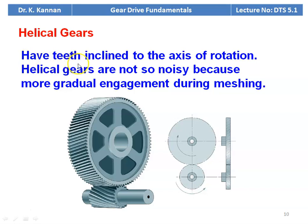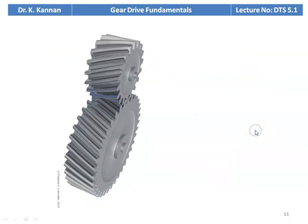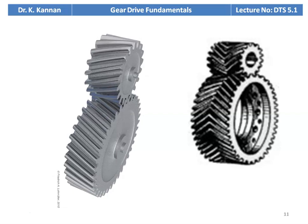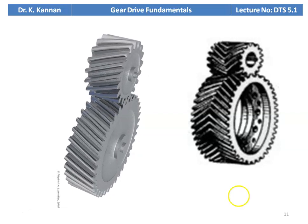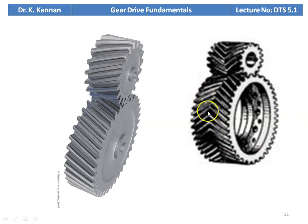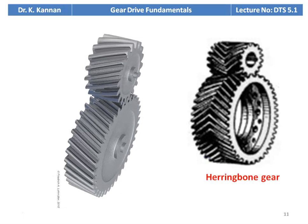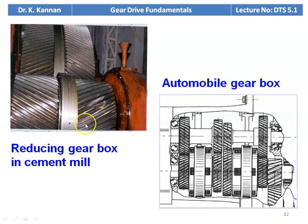The next type is helical gear. They have teeth inclined to the axis of rotation. Helical gears are not so noisy because of more gradual engagement during meshing. Comparing with the spur gear, it is silent in operation because the engagement is very gradual. This is also the herringbone gear, which has helical teeth on both sides. These are the reducing gear boxes of a cement mill and an automobile gearbox using helical gears.